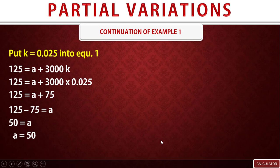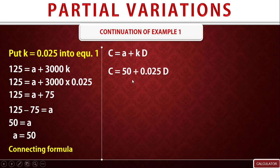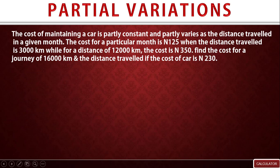We have now determined A equals 50 and k equals 0.025. Substituting these constants into the connecting formula C equals A plus kD gives our main connecting formula: C equals 50 plus 0.025D.